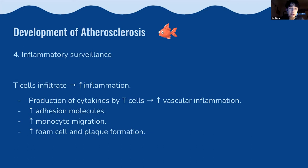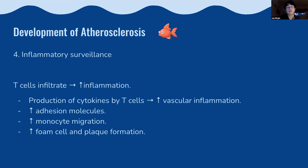Next is inflammatory surveillance — the typical immune response where T cells infiltrate the inner layers, leading to increased inflammation. Cytokines produced by T cells lead to increased vascular inflammation, more adhesion molecules, more monocytes coming to the area of fatty deposition, and therefore increased foam cell and plaque formation because more macrophages are arriving at this site.